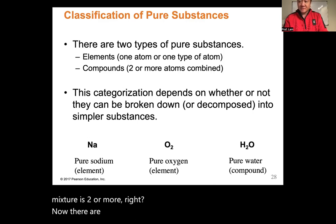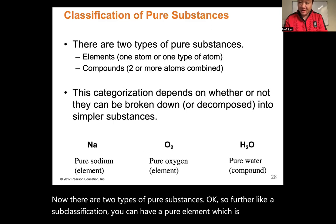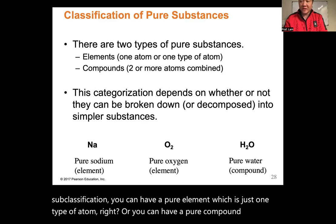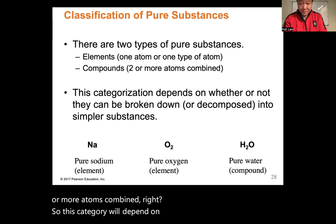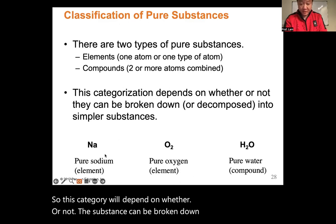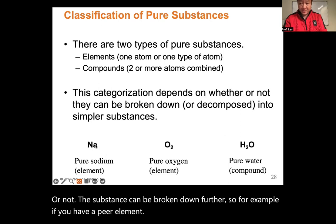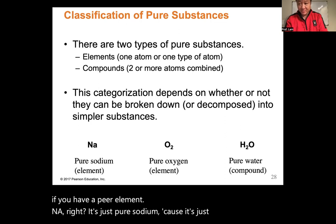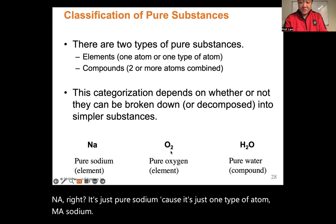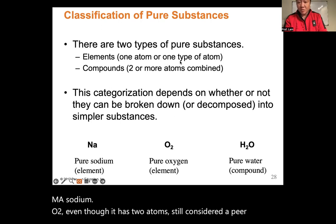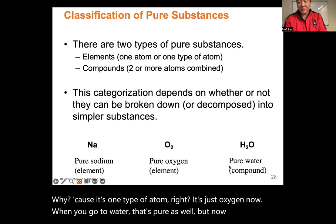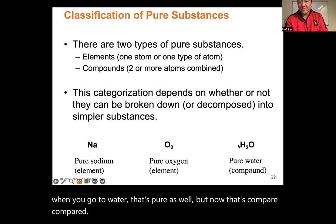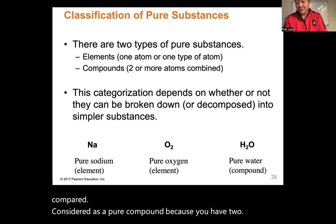There are two types of pure substances. A pure element consists of just one type of atom — for example, Na (sodium) or O₂ (oxygen). Even though O₂ has two atoms, it's still a pure element because it's only one type of atom. Water, however, is a pure compound because it combines two different types of atoms. Whether something is an element or compound depends on whether it can be broken down further.